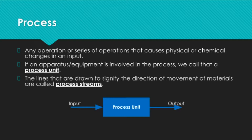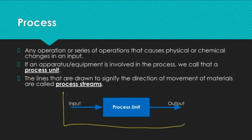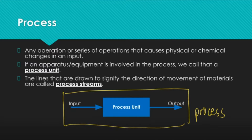Now when we represent process units in terms of what we call block flow diagrams, the inputs and the outputs to the process unit are called the process streams. These are lines that are drawn to signify the direction of movement of materials in a process. So to make it clear, this entire thing is an example of a process, while the thing responsible for the changes is the process unit, and the input and output streams are what we call the process streams.